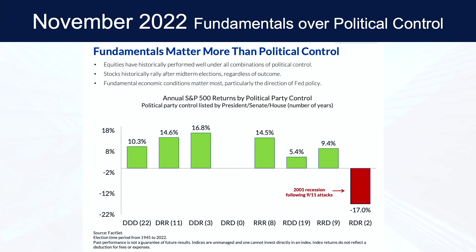What this whole process tells you is it's not so much the political control as it is the fundamentals of the market. We're not trying to get out because one party's in or another party's in, but when it comes to the midterms we do have to be mindful of historical data — it rises after a midterm because there's certainty. People know who's going to be in control and have an idea of the direction they're going. The market likes certainty and doesn't like uncertainty, so before the election you saw a lot of volatility.